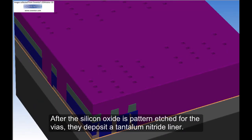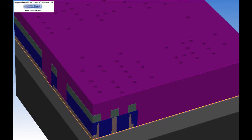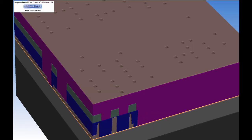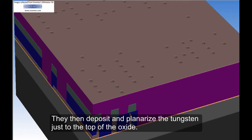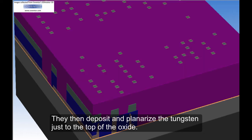After the silicon oxide is pattern etched for the vias, they deposit a tantalum nitride liner. They then deposit and planarize the tungsten just to the top of the oxide.